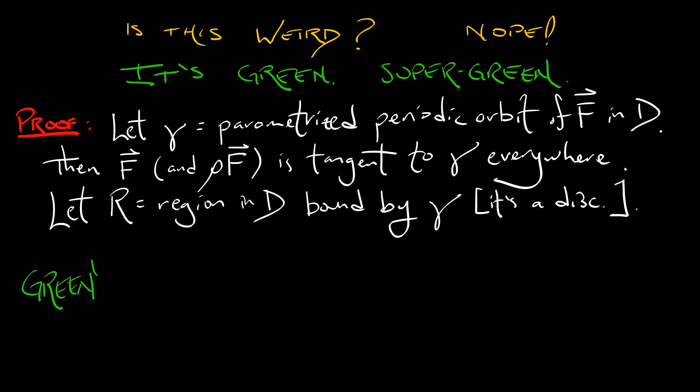Now, Green's theorem says if you integrate the flux of this vector field along the loop gamma, that is, you take the integral of rho f dotted with the normal, integrate that with respect to arc length, then,